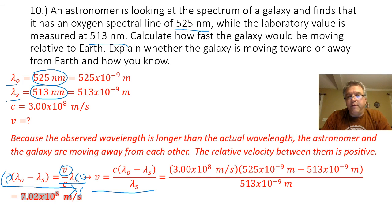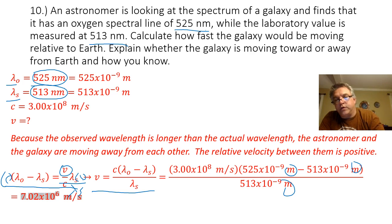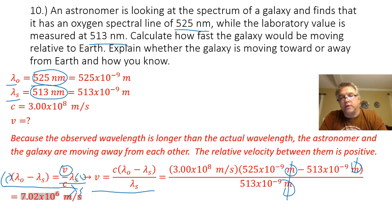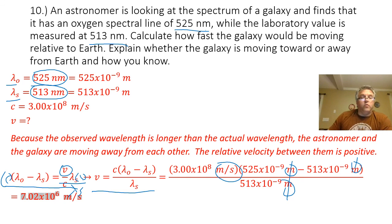I plug all of my values into this equation. Note that I am converting everything to meters, but as I mentioned in the previous video, you don't necessarily need to do that, because all of the length units cancel each other out in the dimensional analysis, leaving just units of speed. So it doesn't matter what unit for length you use, as long as they cancel out. When I do all the math, I end up with a velocity of 7.02 times 10 to the sixth meters per second.